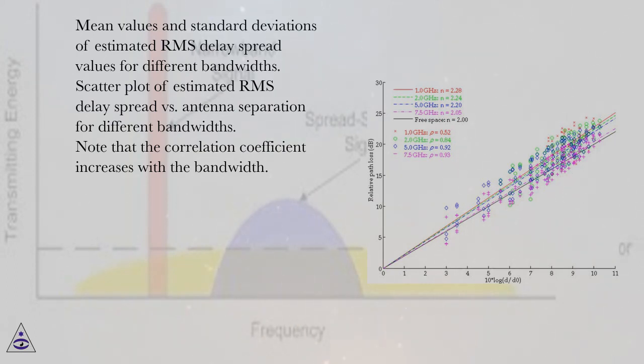Scatter plot of estimated RMS delay spread versus antenna separation for different bandwidths. Note that the correlation coefficient increases with the bandwidth.